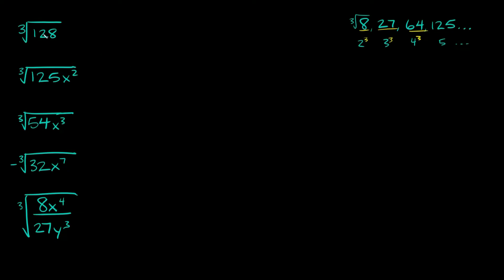So here with this first problem we have the cube root of 128. You just want to think of what two numbers can I multiply together to get 128. Here you would specifically want to use 64 times 2, because 64 is a perfect cube, and you want to use perfect cubes because it's going to simplify your math. So the cube root of 128 we can break down into the cube root of 64 times the cube root of 2.